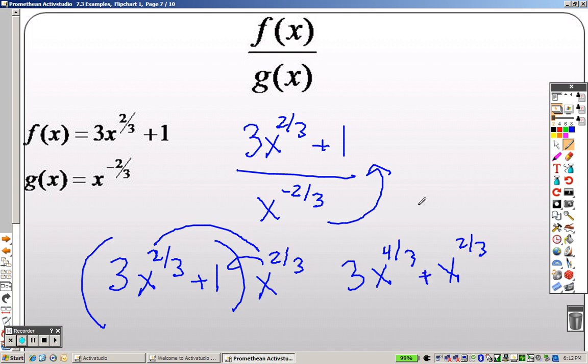Alrighty. So what we can actually do here is because that is an improper fraction, I can try to rewrite that as a mixed number, which is 1 and 1 third. So that's like saying 3x to the 1st power, x to the 1 third, plus x to the 2 thirds.